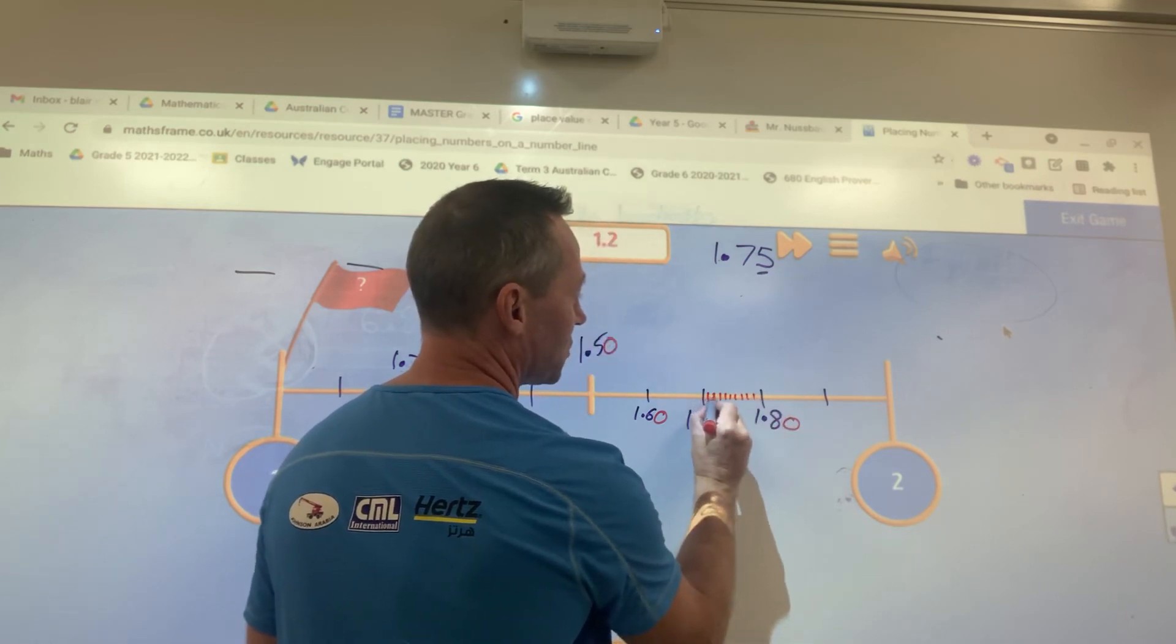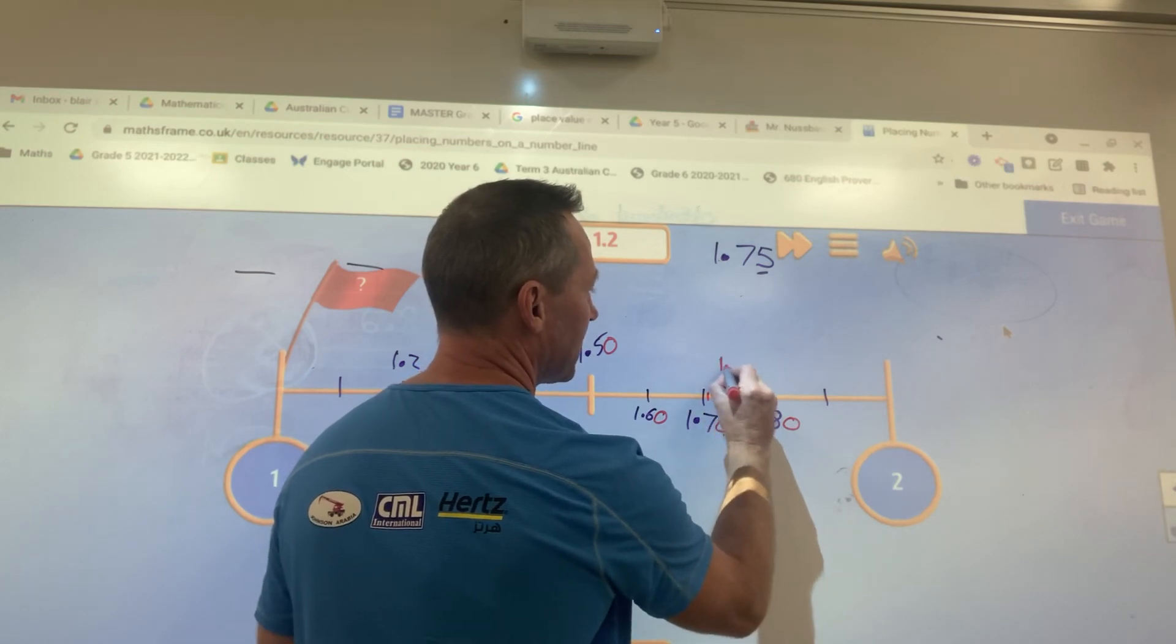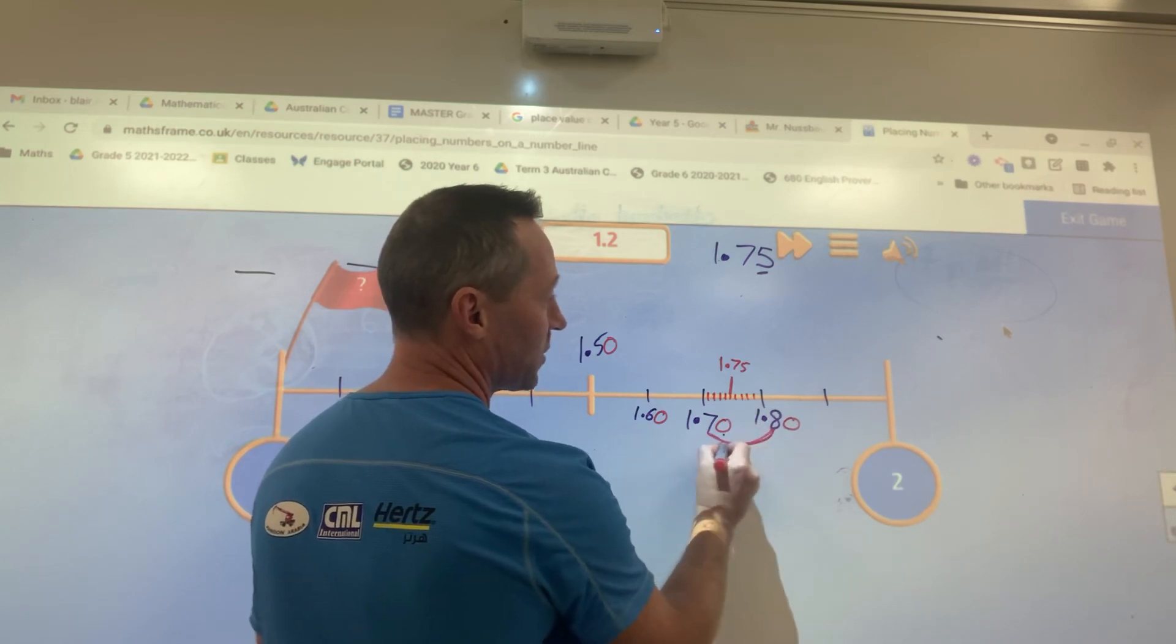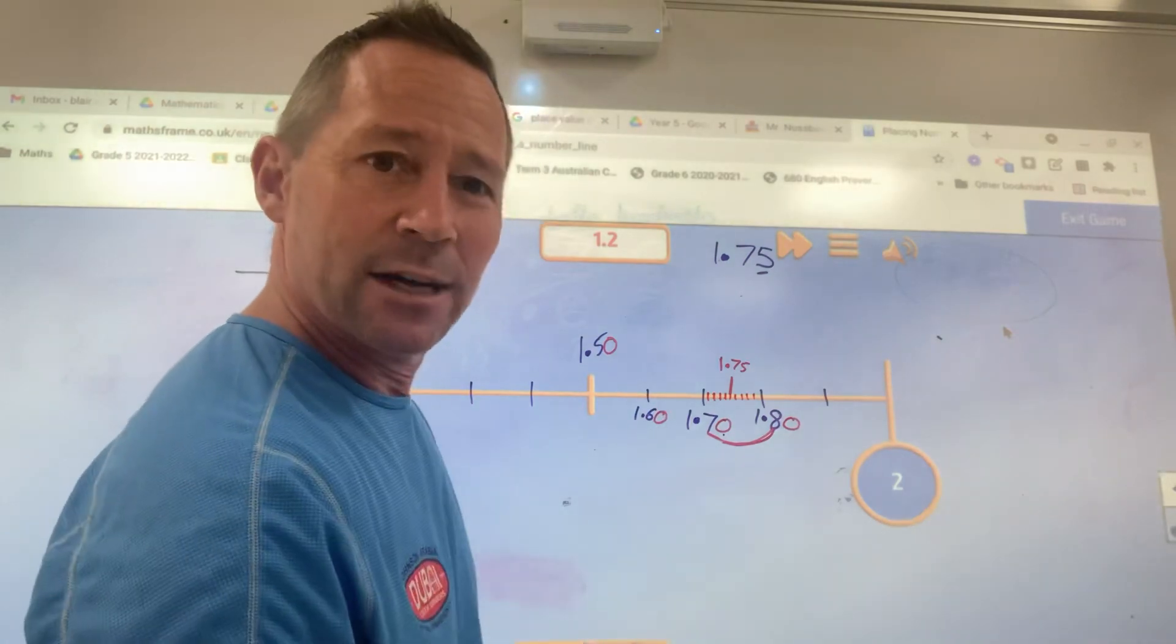So 5 would be 1, 2, 3, 4, 5, right here. That would be 1.75. It's in between here, halfway in between. Easy, really, isn't it? Yeah.